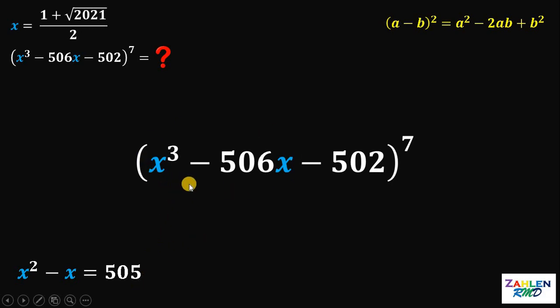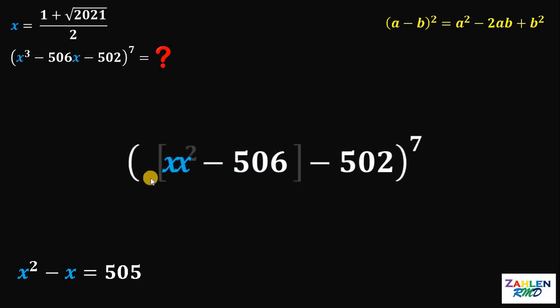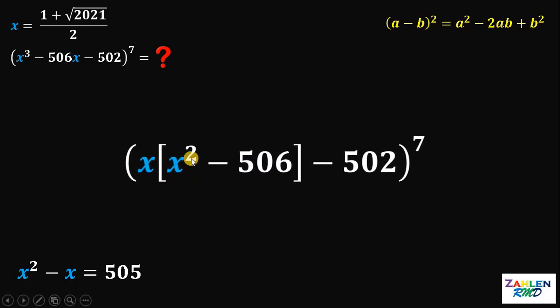What we're going to do to this expression is let's factor out first the variable x. This will give us x multiplied by x squared minus 506. Now, given this equation, we have x squared and 505. Now, don't forget that we need 506, not 505.